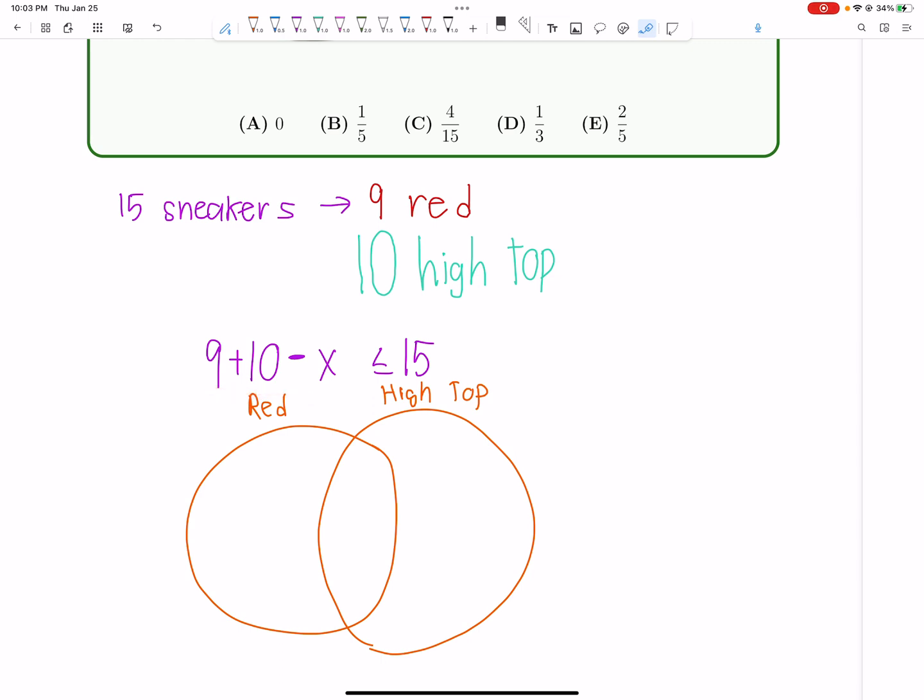Now, this is the total number of red or high-top shoes. Now, keep in mind that this does not exactly have to equal 15, right? Because it's possible we have some shoes that are not red or high-top. But it has to be less than or equal to 15.